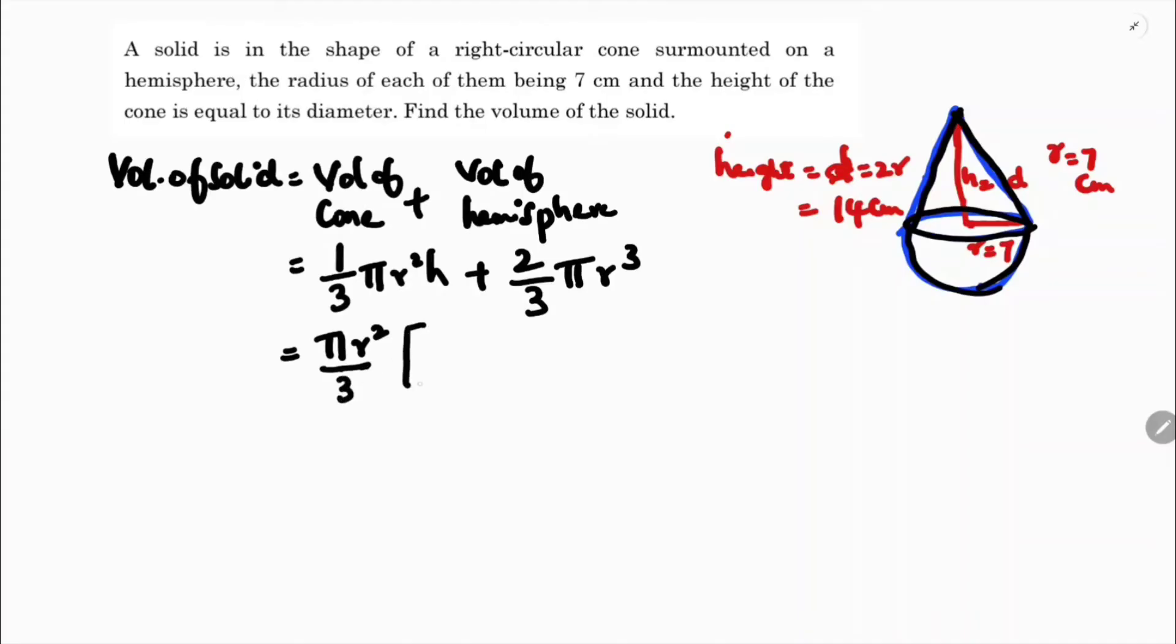Now I'll substitute the values. π is 22/7, 3 as it is in the denominator, radius is 7×7, h is 14 plus 2 times 7. Here 7 and 7 cancel, so 22×7×(14+14)/3.